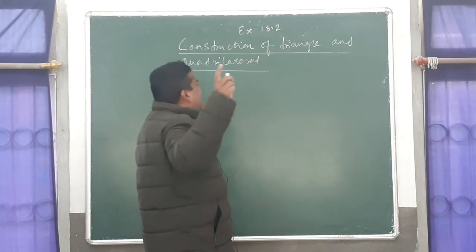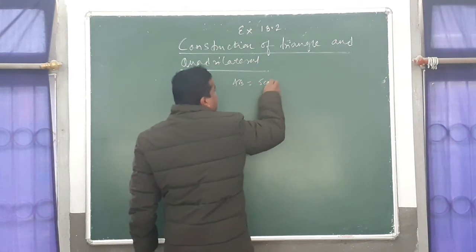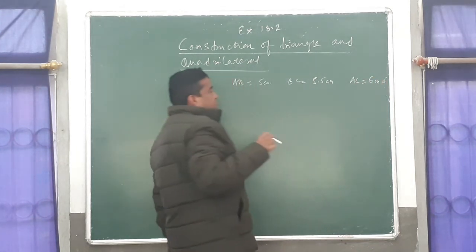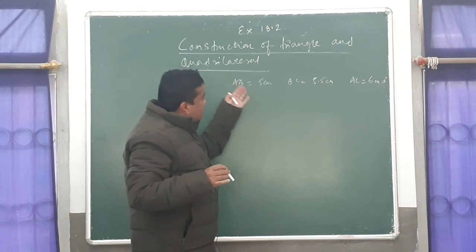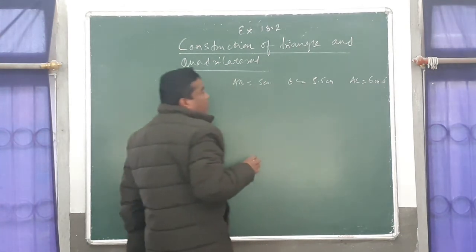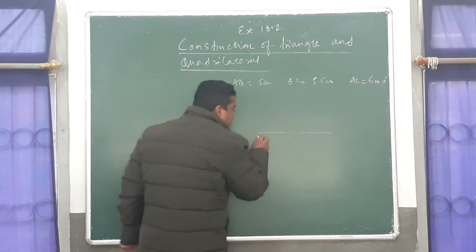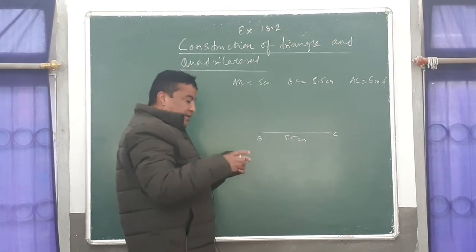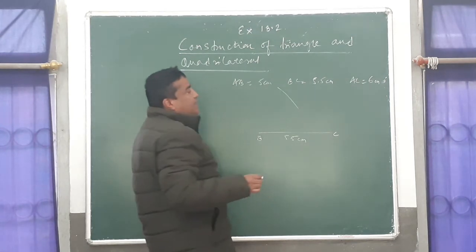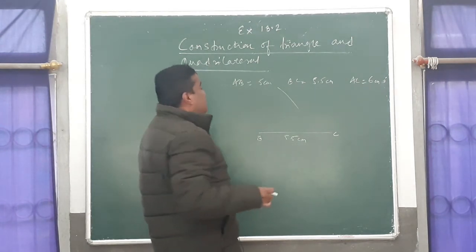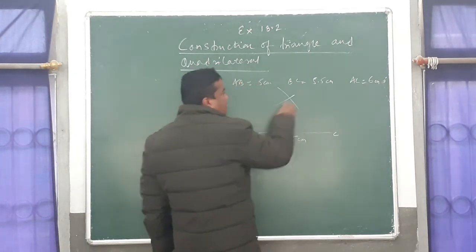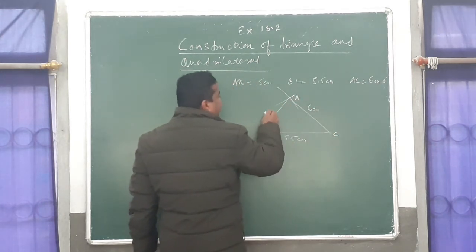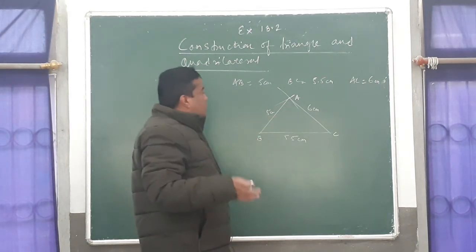Now I will do the ICSE 2014 question. AB equals 5 centimeter, BC equals 5.5 centimeter, and AC equals 6 centimeter. You also have to construct the incircle here. The difference between this question and the previous one is that here angles are not given — all the sides are given. I am taking BC as the base, which is 5.5 centimeter. After that AB is 5 centimeter — take 5 centimeter with the compass from B and draw an arc. AC is 6 centimeter — take 6 centimeter from C to touch the previous arc, then write A and join it. This is the required triangle.